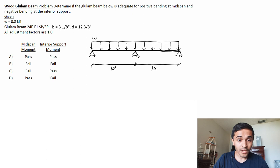Alright so the problem here is determine if the glulam beam below is adequate for positive bending at mid span and negative bending at the interior support and we're given the load, the glulam beam size and mark, and also that all the adjustment factors are one.